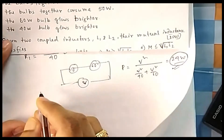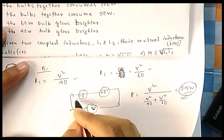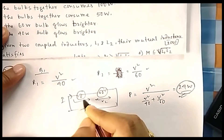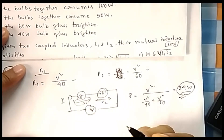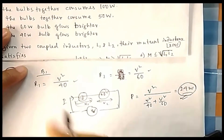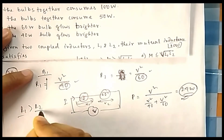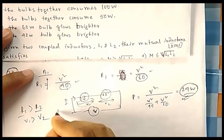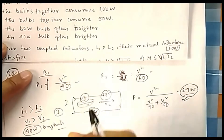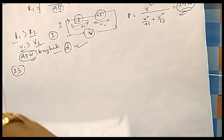Now which bulb glows brighter? In series, both carry the same current, but voltages differ. The bulb with higher resistance has higher voltage across it and hence more power. R1 = V²/40 is greater than R2 = V²/60, so V1 > V2. Therefore the 40W bulb will glow brighter. Option D is the answer.